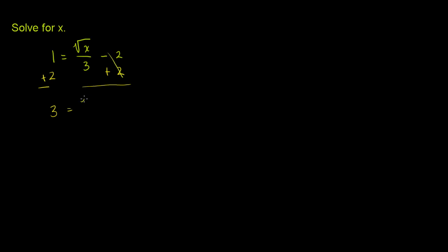So we have the square root of x over 3. Then we could multiply both sides of this equation by 3. And so we get 9 is equal to the square root of x.